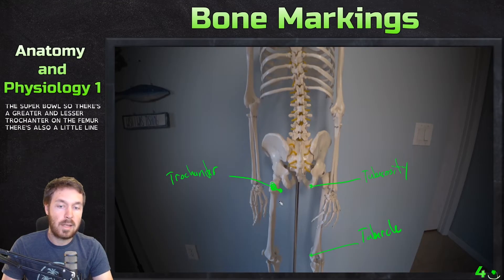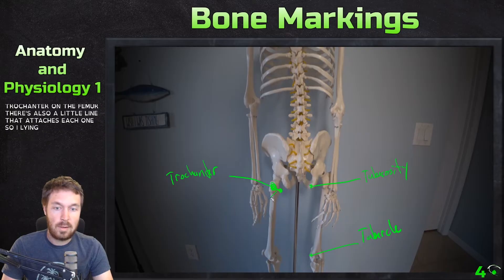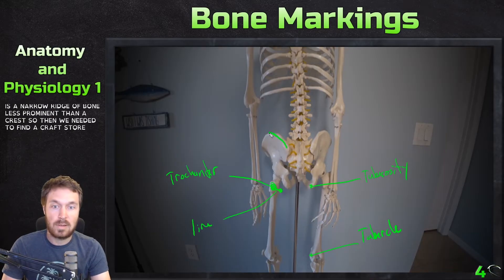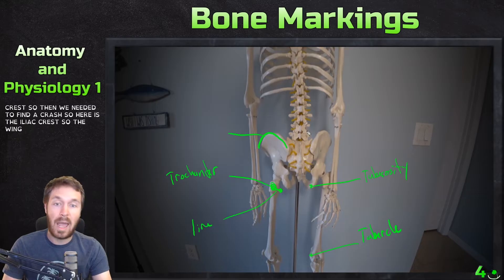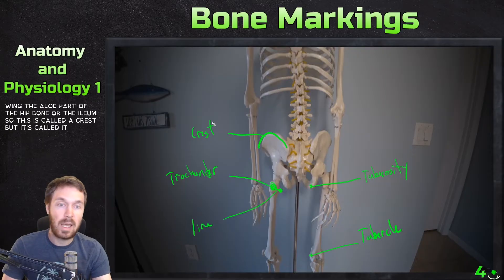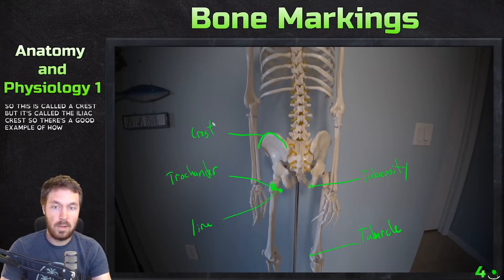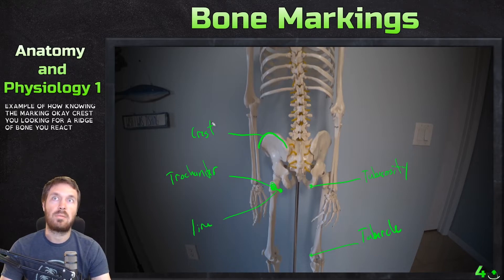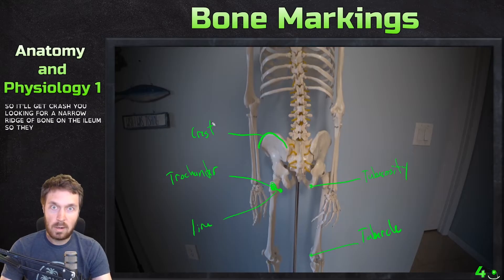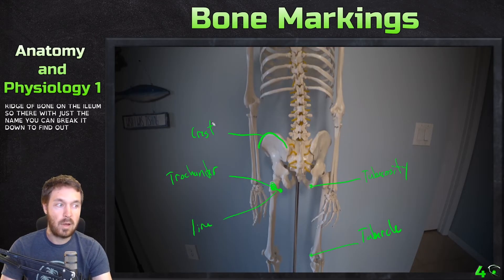A line is a narrow ridge of bone, less prominent than a crest. An example of a crest is the iliac crest — the wing or ala part of the ilium. That's a good example of how knowing the marking helps: 'crest' means you're looking for a ridge of bone, and 'iliac' tells you it's on the ilium. So 'iliac crest' — you're looking for a narrow ridge of bone on the ilium. With just the name, you can break it down to find out where it is.